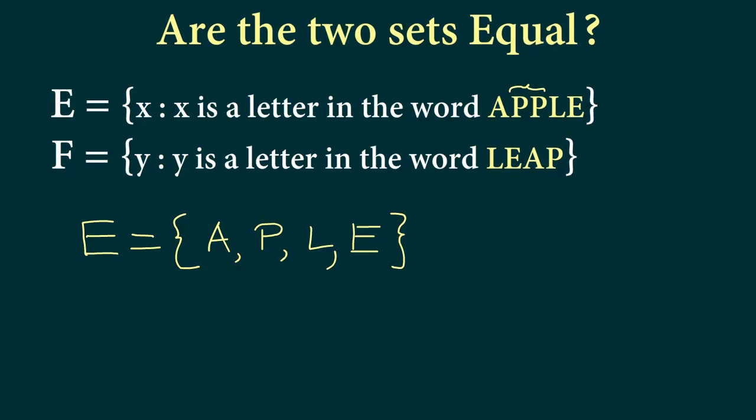And what about set F? So set F contains L, E, A, P. So we can write L, E, A, P. And when we compare we see that all elements of set E are elements of set F and similarly all elements of F are elements of E. Therefore, we say that set E is indeed equal to set F.